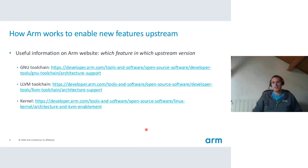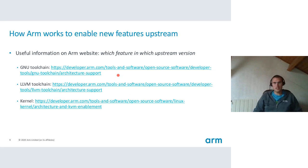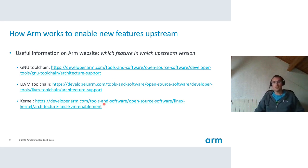On the wiki page at the top, there are three links to the ARM website which are very useful to know which features are in which upstream version. You have a page for the GNU toolchain — so if you want to know in which version LSE atomics were added, for example, you will find the information there. You have the same for the LLVM toolchain, and also for the kernel, which is very useful to know if your current kernel will support a given feature.